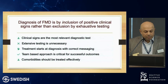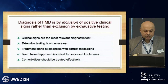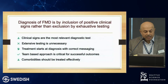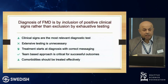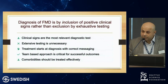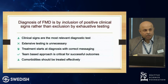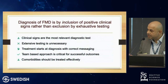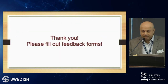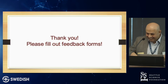In summary, the clinical signs are the most relevant diagnostic tests for functional movement disorders. Extensive testing is usually not necessary. Treatment starts at diagnosis, but the messaging should be absolutely clear. A team-based approach is necessary, and comorbidities such as depression, anxiety, and pain should be treated effectively.